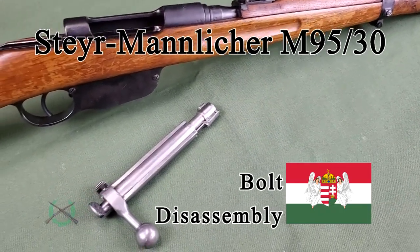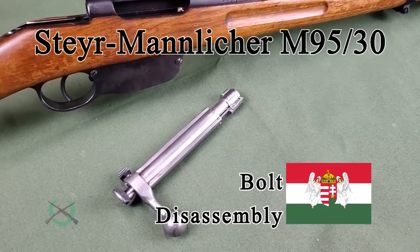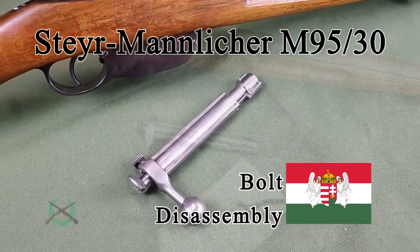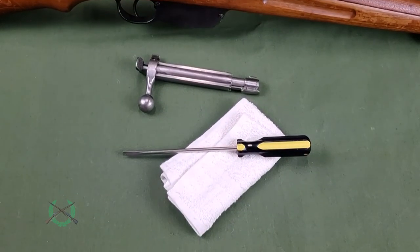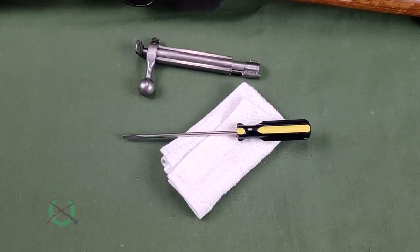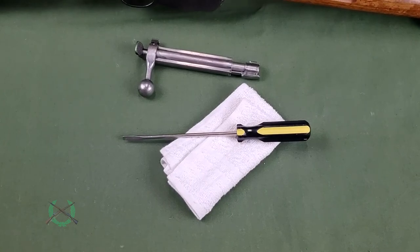This video will cover disassembly of the Steyr Mannlicher M95 bolt. Disassembly of the bolt does not require any tools other than a small screwdriver to remove the safety. A small cloth may be useful for removing and inserting the bolt head.